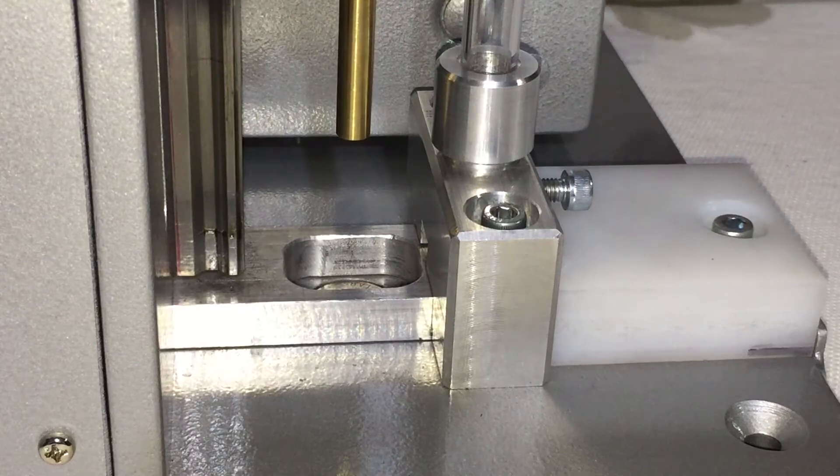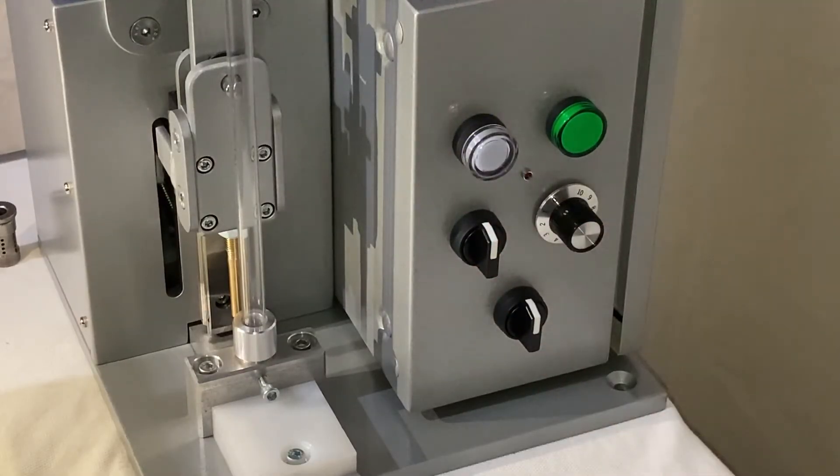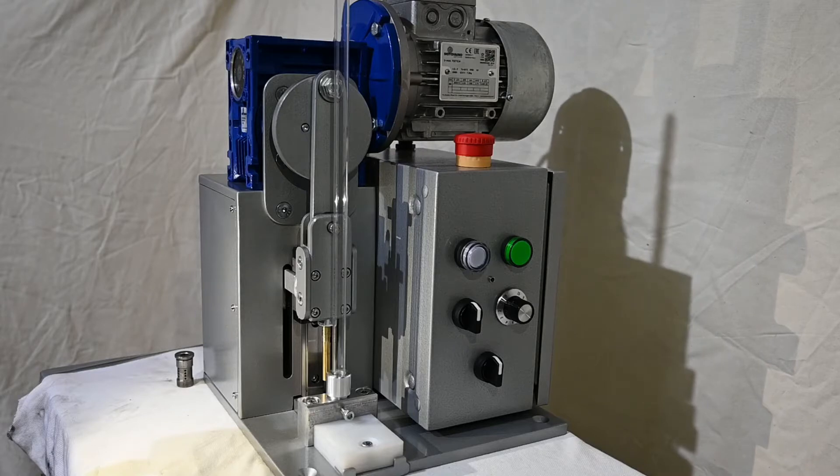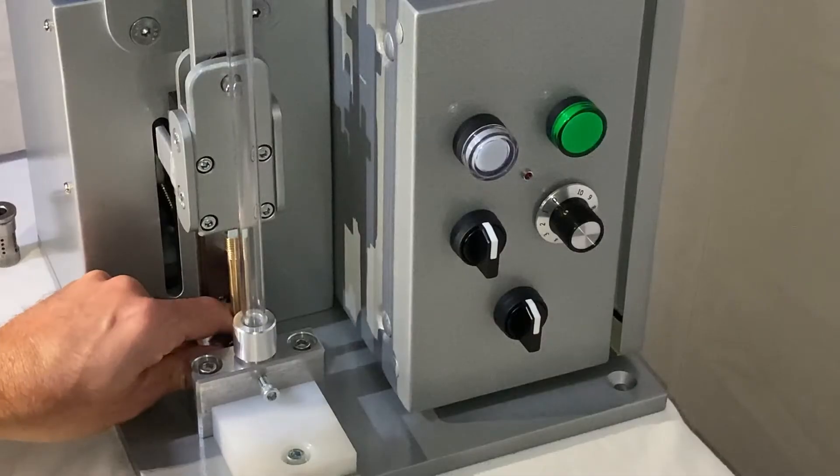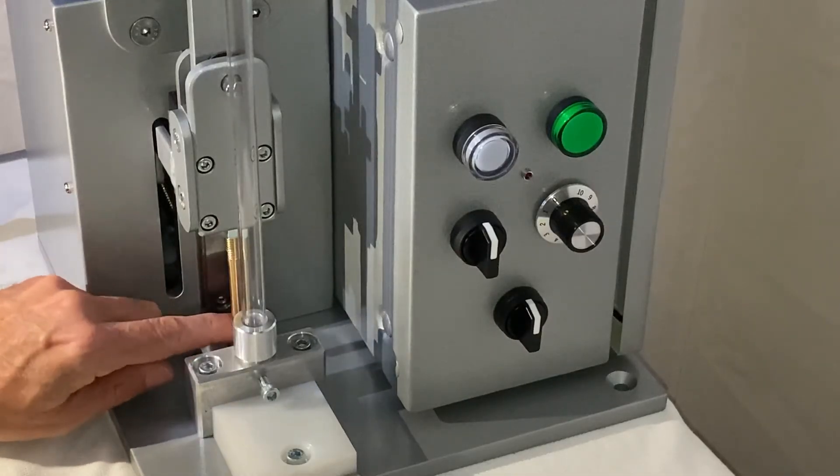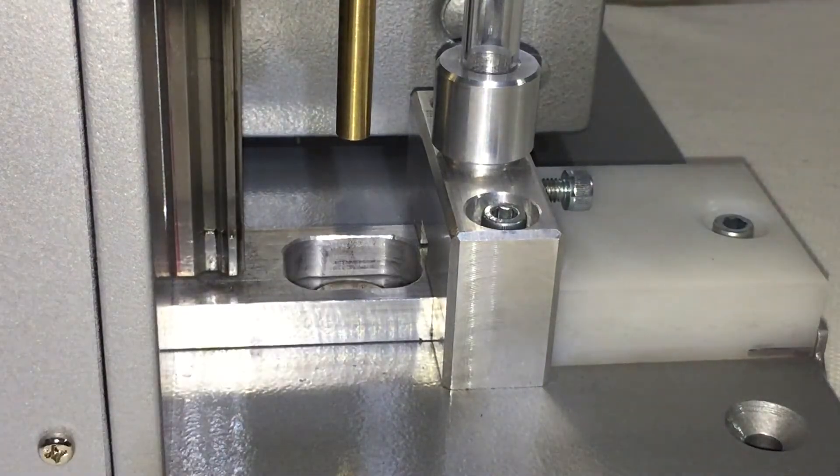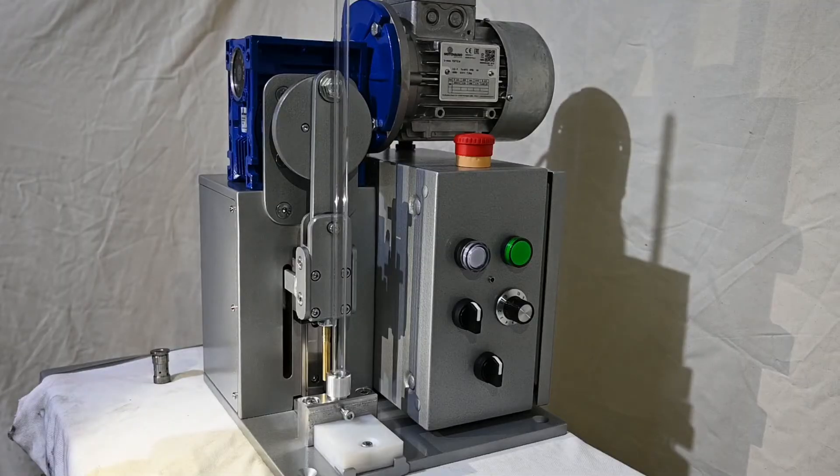We'll jog back to the upper position, turn the machine off, and do another die change. Easy as that, changed again, ready, and we'll load another style.